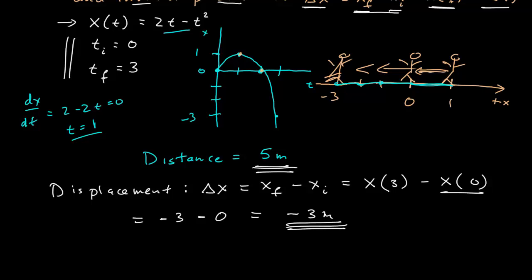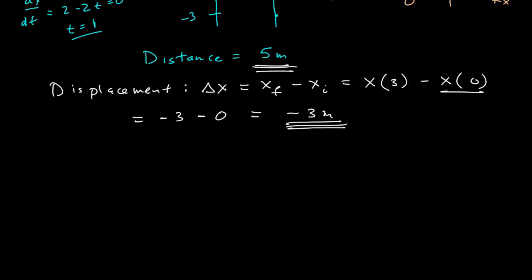This highlights another key difference between displacement and distance. The distance is a scalar. It is the total length traveled. It is represented by a single positive number.